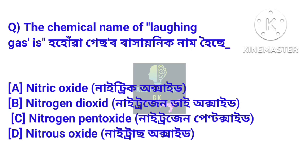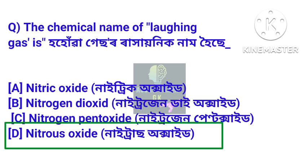Question 14: The chemical name of laughing gas is — humwa gesor rakinic nam hoi se. Answer: Nitrous oxide. Humwa gesor rakinic nam tuh hull nitrous oxide gas.